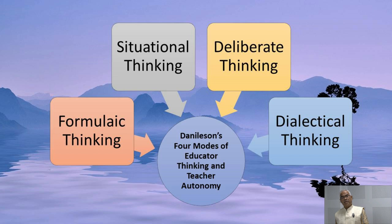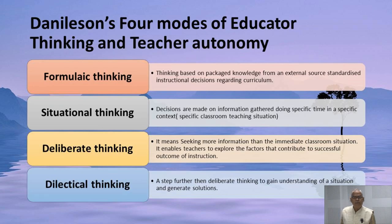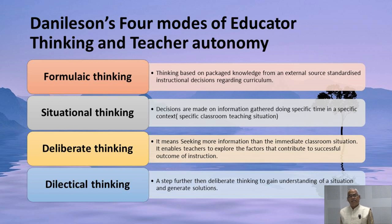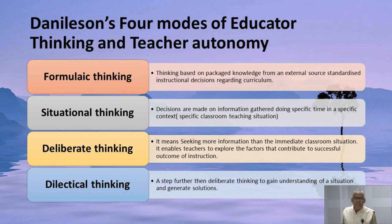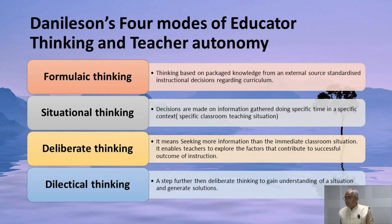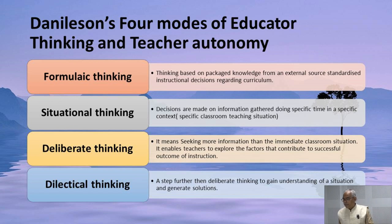From first to fourth, they are put in order of increasing complexity. Form-like thinking is a low level of reflection because it is based on structured activities — guided and directed activities in a structured curricular framework, packaged knowledge and exercises in textbooks. External sources of learning promote instructional decisions regarding curricular practices, making it the lowest order of reflective thinking.